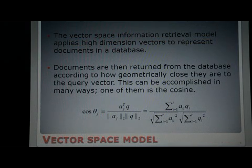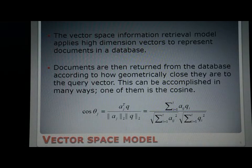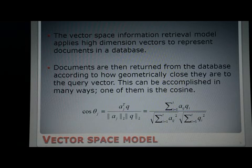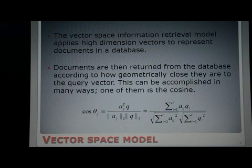The first model I acquired is the vector space model. The vector space information retrieval model applies high-dimensional vectors to represent documents in a database. A single document is represented as one column vector, and each component of the vector contains information on a particular keyword or term associated with the document. One way the value of a keyword is stored is by its frequency — for example, the number of times a keyword appears in a document can be the value of that term in the document vector.